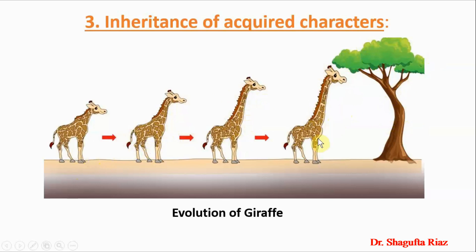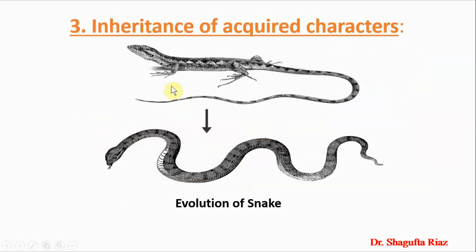After successive generations, the present-day giraffe has elongated both its neck and four limbs. Another example is the evolution of the snake. The ancestors of snakes were lizard-like, and these ancestors developed the habit of gliding over the ground and creeping into narrow holes to escape from danger. As a result, over many generations, their bodies elongated and their limbs disappeared — because of the disuse of their forelimbs and hind limbs while hiding in small holes.